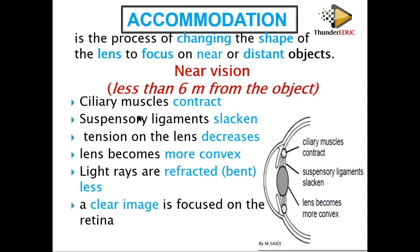The ciliary muscles and suspensory ligaments work antagonistically — in opposite ways. When the ciliary muscles contract, the suspensory ligaments must relax and become loose. Because they slacken, the tension on the lens decreases.